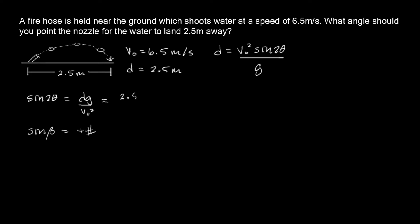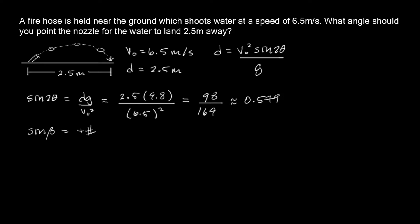For d I've got 2.5 meters, times 9.8 meters per second squared — the gravitational constant — over V₀ squared, which is 6.5 squared. This simplifies to 98 over 169, which is about 0.579, so let's just say approximately 0.6. This is not our final answer — this is just the result we have for sine of 2θ. So we've got sine 2θ approximately equal to 0.6.